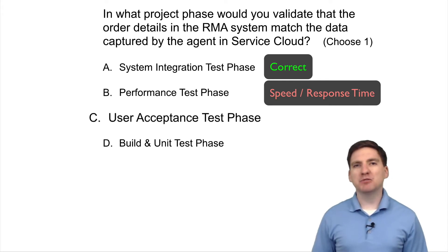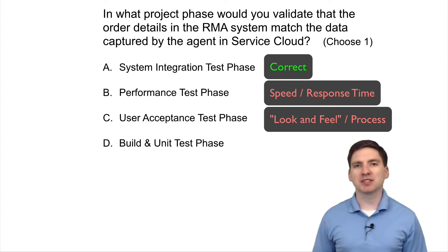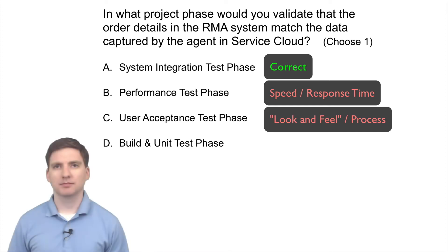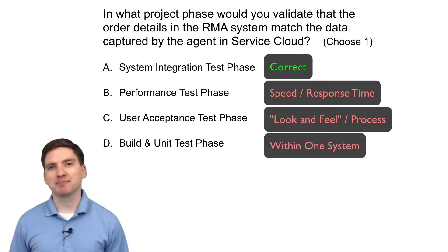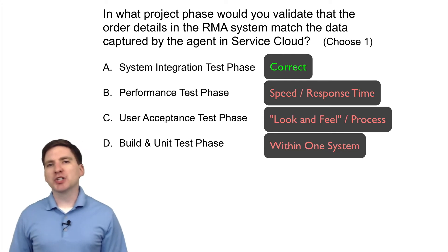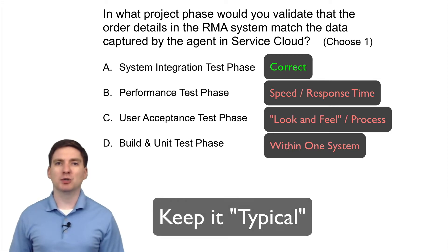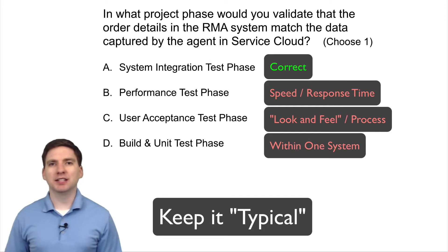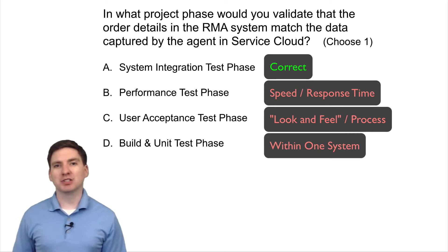User acceptance testing may involve some data validation, but the focus is usually more toward the look and feel of the system and whether the process works for doing the job. Build and unit tests would likely involve some checks of data passing between two systems, but unit testing usually focuses on functionality within a particular system. The more rigorous data flow testing is usually saved for system integration test. Every project is different, so expect these questions to reflect what is most typical or industry standard.